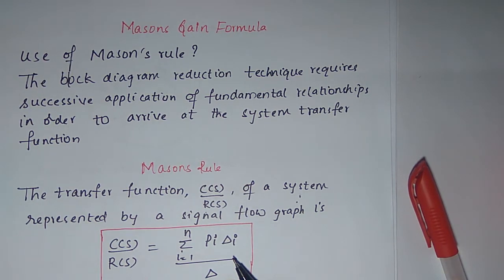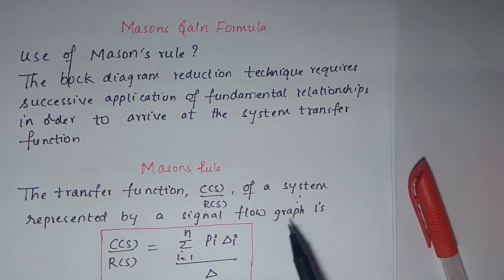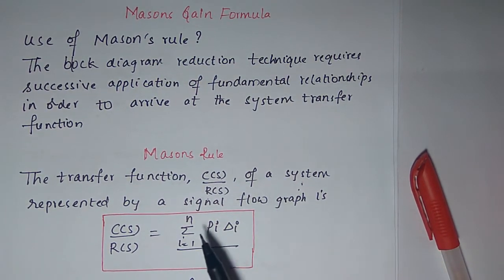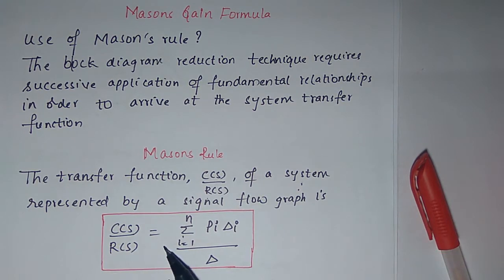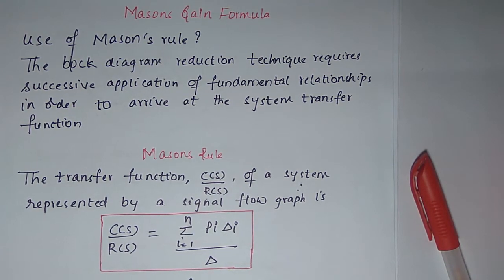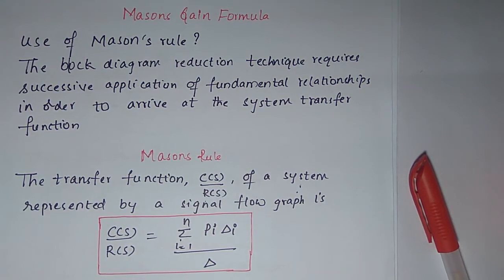Mason's rule is given by a formula where the transfer function C(s)/R(s) — that means Laplace of output by Laplace of input — of a system represented by a signal flow graph is given by: C(s)/R(s) = (Σ Pi·Δi) / Δ. This is Mason's gain rule to find the transfer function of any system represented by a signal flow graph.